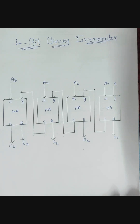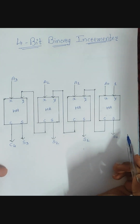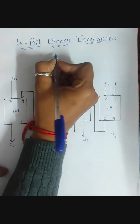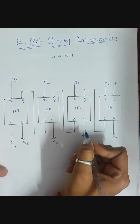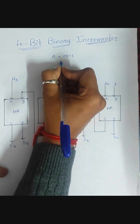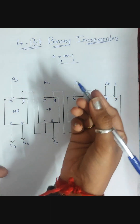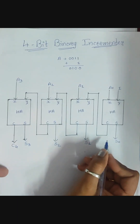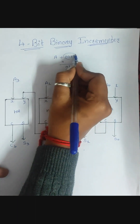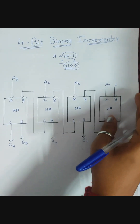In this video lecture you are going to learn about the circuit of a 4-bit binary incrementer. First of all, you need to know how we are going to increment a 4-bit binary number. Suppose I have a number A that's like 0011. If I want to increment the number, that means we are adding one at the least significant bit, so the number would be incremented by one. This is my original number and this is my incremented number.